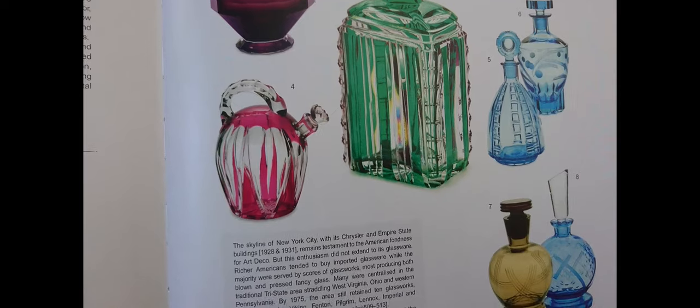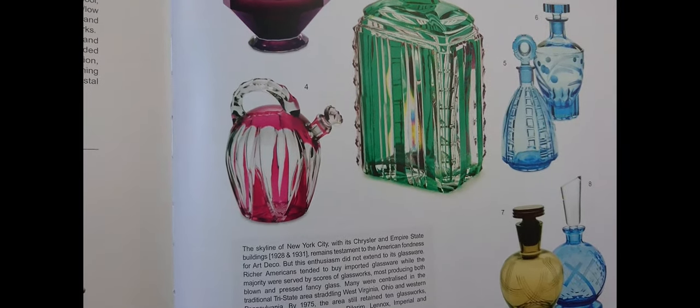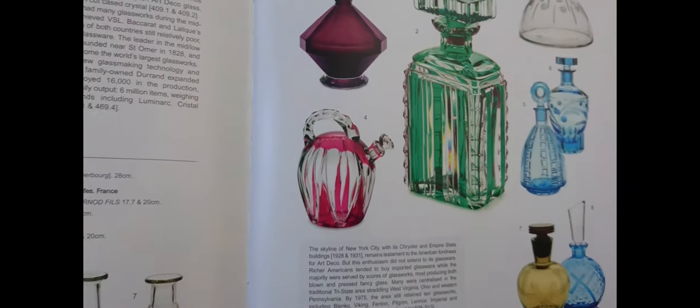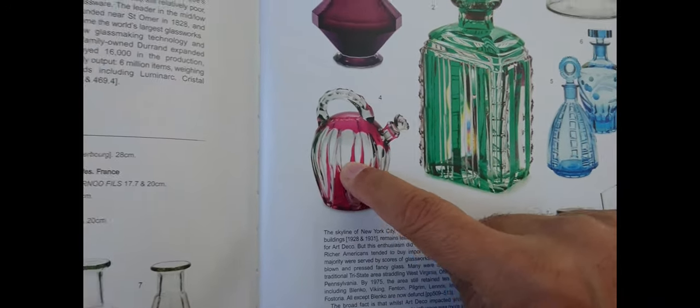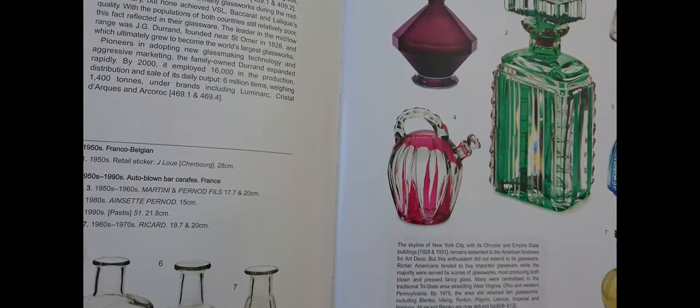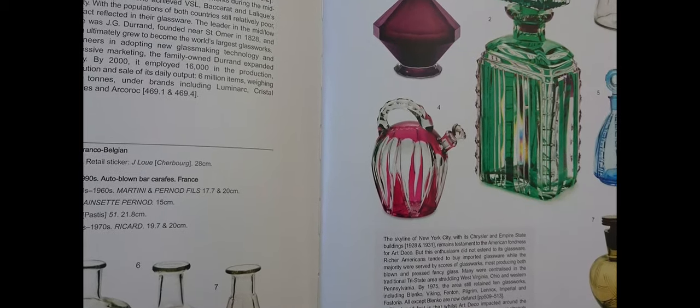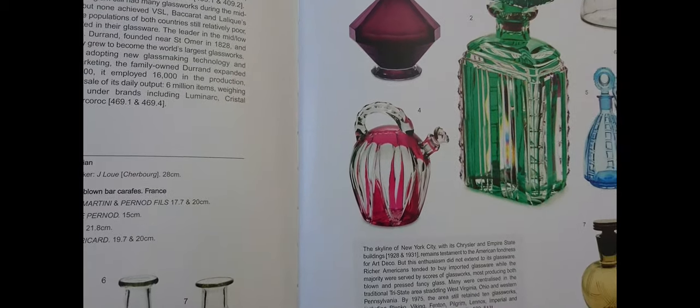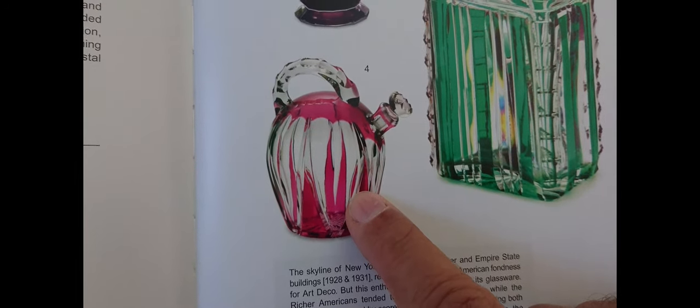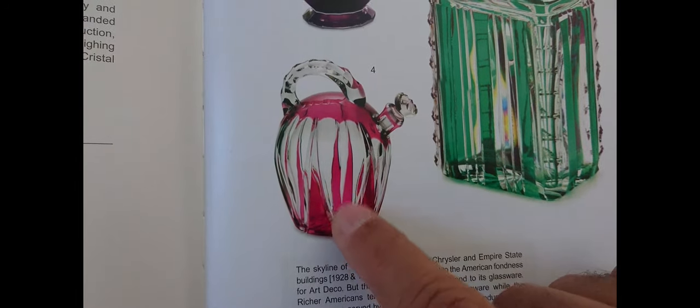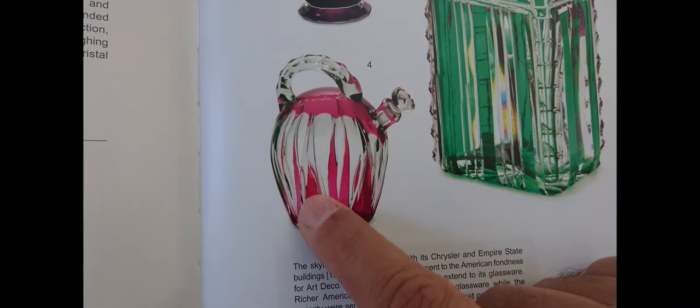So a couple of pages over, we're in the French bit, and we've got this decanter here, number four, which is made by St. Louis Monthal Lorraine. The date given for this one is 1925. Now I've got a couple of these to show you. They're very nice quality things. Mine is slightly different design, but overall it's pretty much the same.